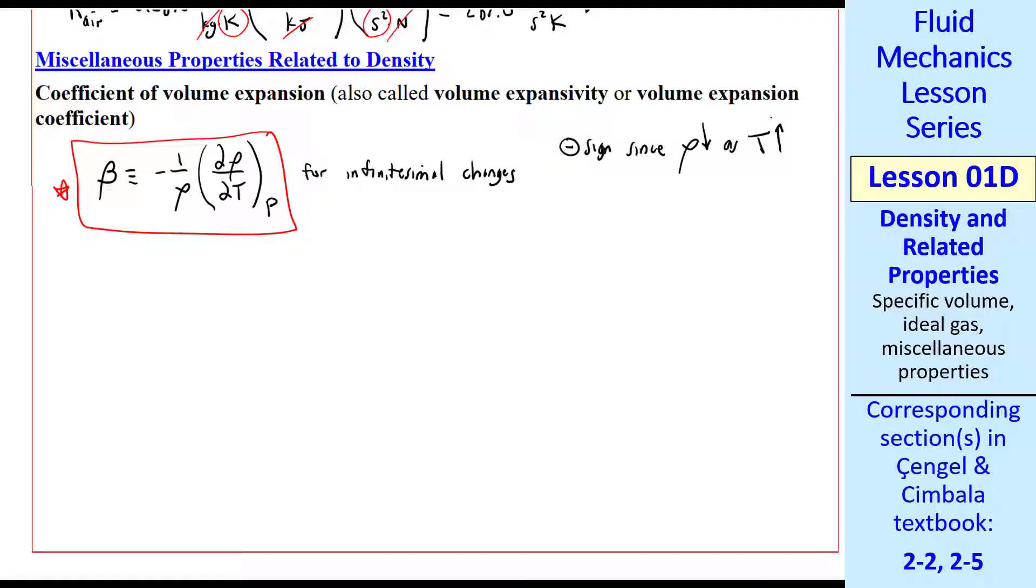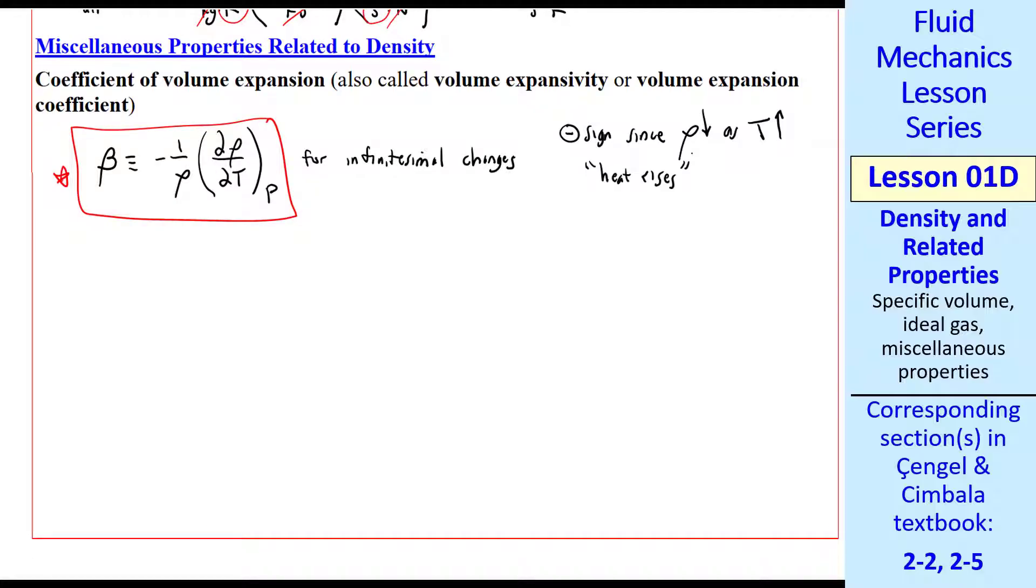There's a negative sign in this definition. Since density goes down as temperature goes up for most substances, everybody knows that warm air rises. It's less dense than cool air. There's an expression that heat rises due to buoyancy. That's why there's a negative sign in this definition.